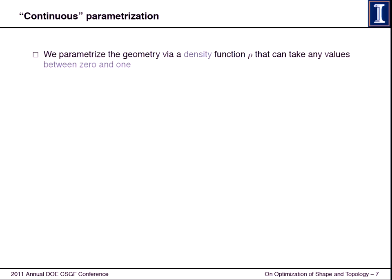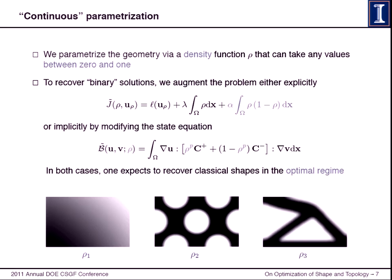One common approach is to relax the problem, in a sense, and parametrize your shape via these density functions that take rather than only values of 0, 1, values anywhere between 0 and 1. Then you go and augment your problem in such a way that, in the optimal regime, you get solutions that are binary, densities that appear that are binary.